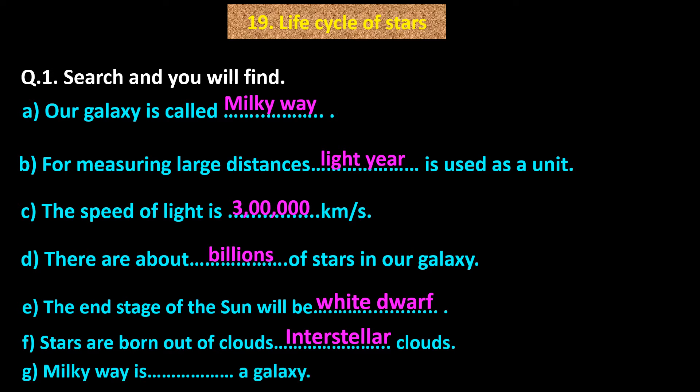G. Milky Way is dash dash dash a galaxy. Answer: Spiral. G. Milky Way is a spiral galaxy.